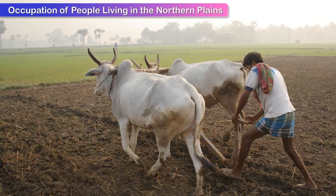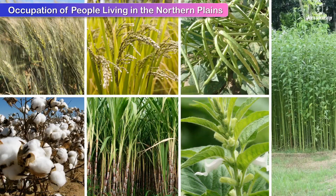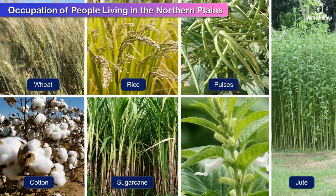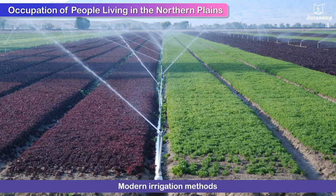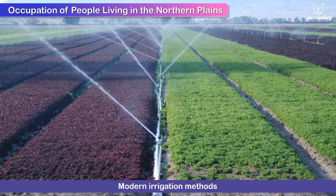Agriculture is the main occupation of people living in the northern plains. Being a very fertile region, the northern plains produce crops such as wheat, rice, pulses, jute, cotton, sugarcane, and oilseeds. Farmers in the northern plains actively use modern irrigation methods. Rice being the major crop grown here, the northern plains are often called the rice bowl of India.